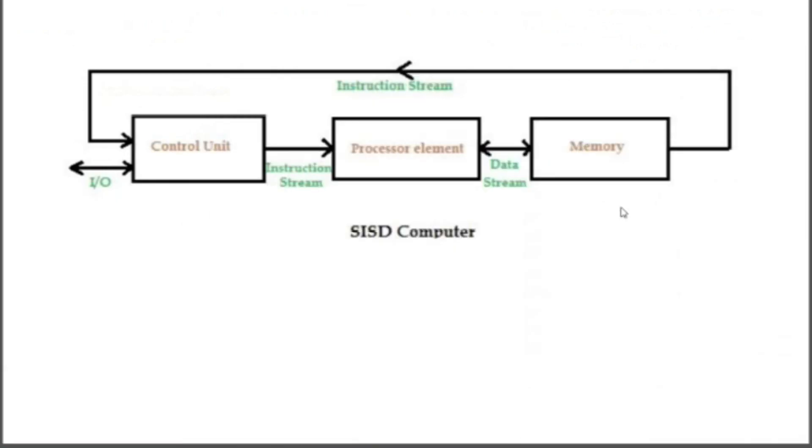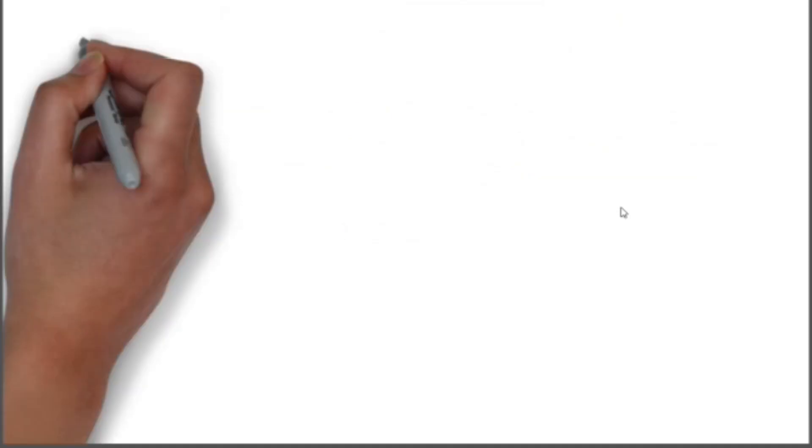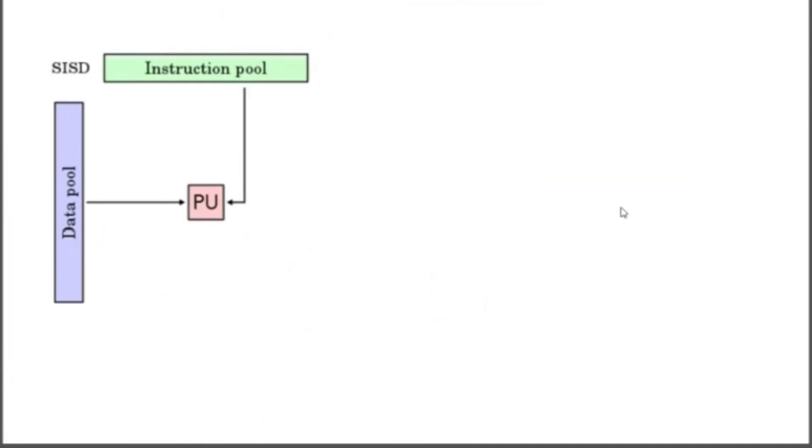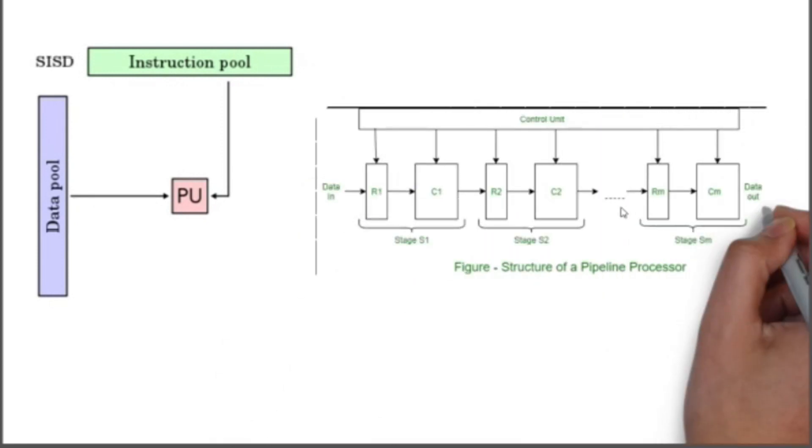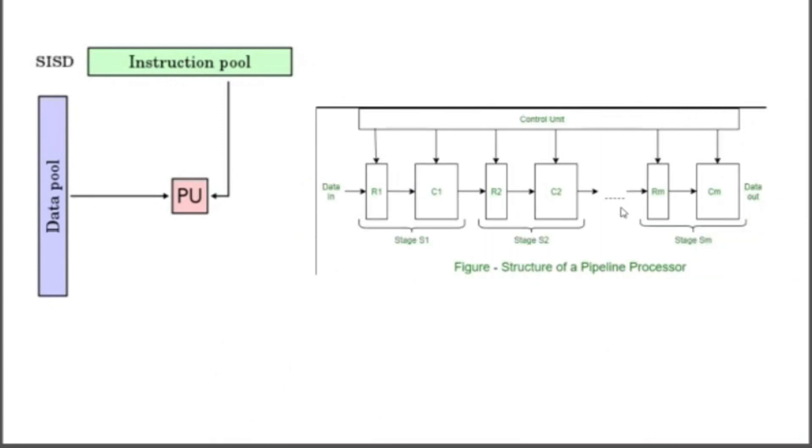In this type of architecture, pipelining can also be performed, which means the execution of multiple instructions at a single time. But while doing so, we have to keep in mind that it can execute only one instruction at a time while putting the other instructions on hold.